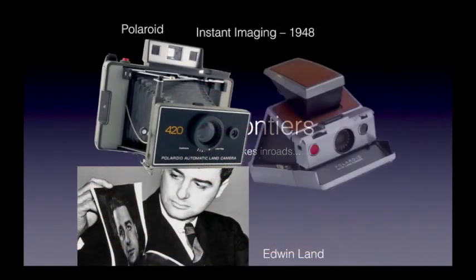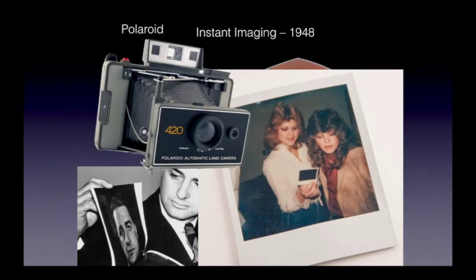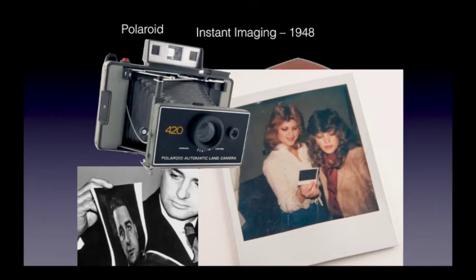Even the invention of the Polaroid process by Edwin Land was based on the latent image. In 1943, in Santa Fe, Land was asked by his three-year-old daughter why the camera couldn't produce a photograph immediately. Land mulled the question over and was inspired to invent the Polaroid Land camera — named after himself, just like Daguerre did with the Daguerreotype and Fox Talbot initially called his process the Talbot type. Even though Land's process was instantaneous-seeming, it was still based on a latent image and development with chemicals, and the image still wasn't available immediately after exposure — the process took at least a minute or two.